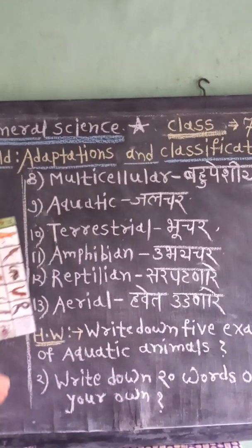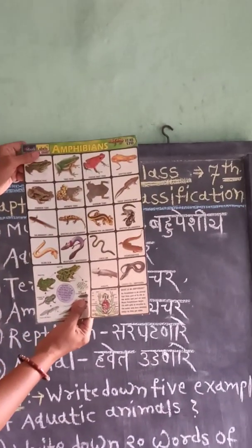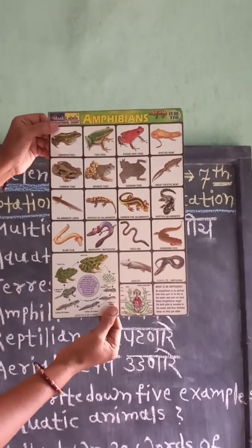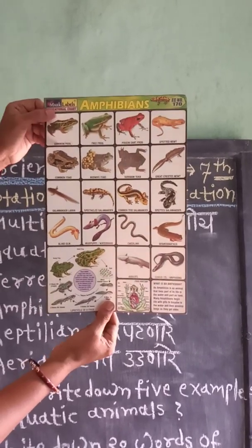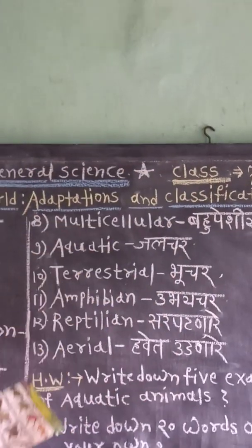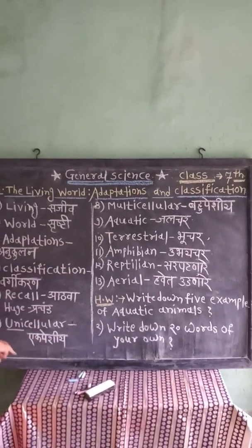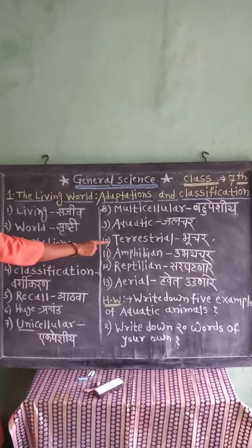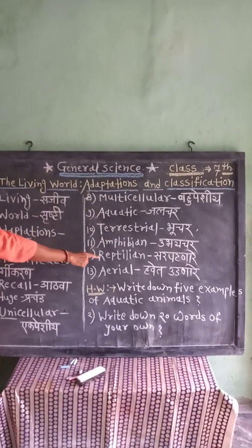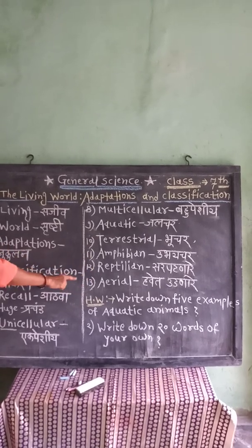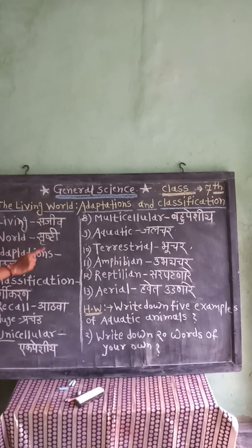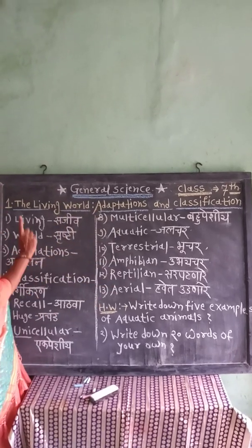Look at this chart of amphibians — all are amphibians, meaning Uvajchar prani. To summarize: some animals are aquatic, some are terrestrial, some are amphibian, some are reptilian, and some are aerial. This world is full of a variety of animals.